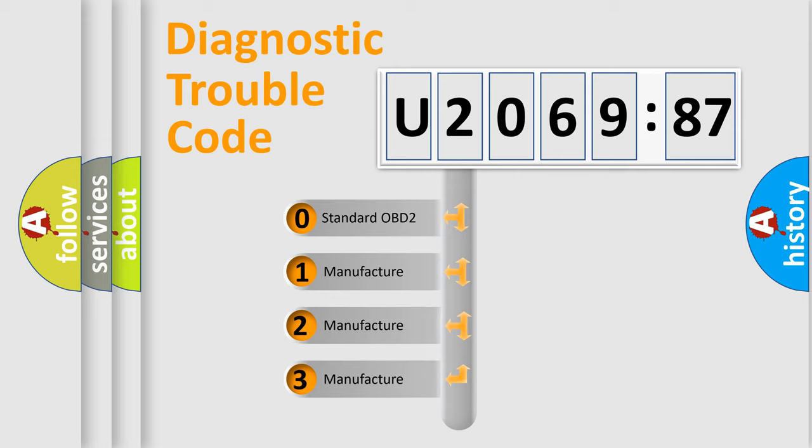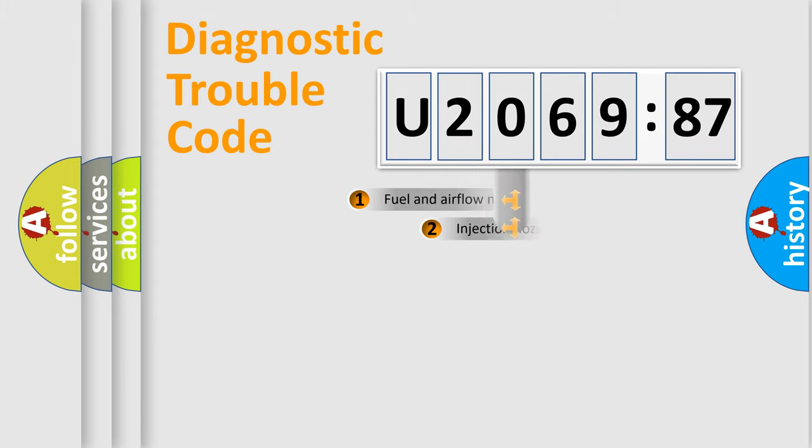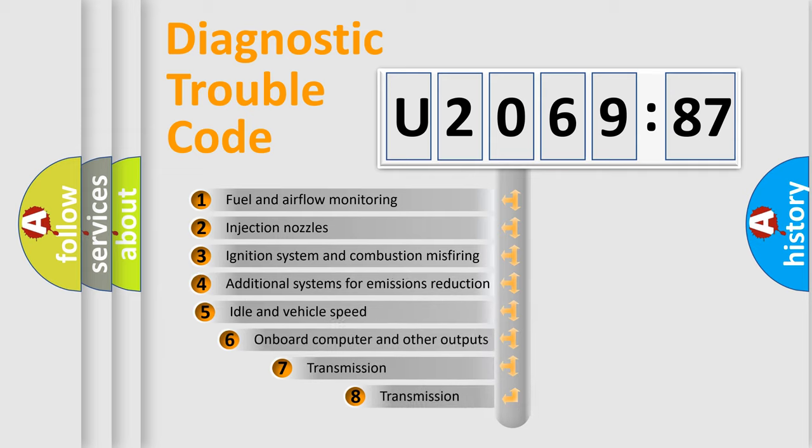If the second character is expressed as zero, it is a standardized error. In the case of numbers 1, 2, or 3, it is a more prestigious expression of the car-specific error.